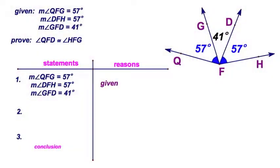Let's get back to that first proof of ours. You can see we already know what we're trying to prove: angle QFD, and that includes these two angles, and we're trying to prove that it's congruent to ∠HFG, which includes these two angles.